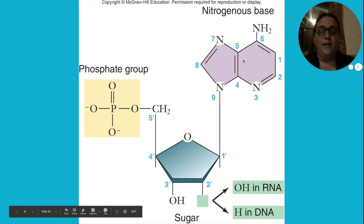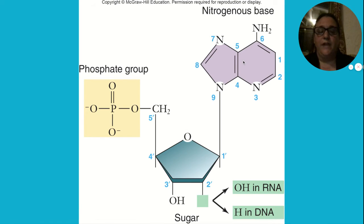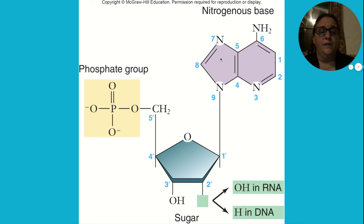So this is what a nucleotide looks like. We've got the phosphate group, that PO4. We've got our five-carbon sugar — one, two, three, four, five, there's the fifth one up there. We've got our nitrogen base, and this one is a double ring, so this one would be a purine. If it was a single ring, it would be a pyrimidine.